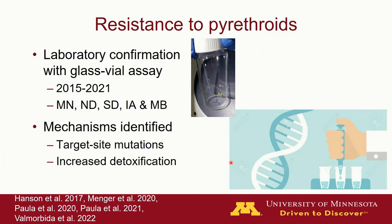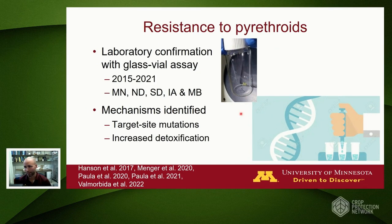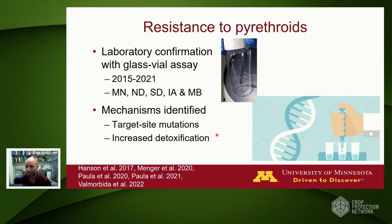We've also been doing work to look at the mechanisms of resistance, figuring out how soybean aphids are surviving exposure to the insecticides. We've got evidence of two different mechanisms: one is called target site mutations, where there are mutations at the binding site on the nerve cells so the insecticide molecules can't bind anymore. We also have evidence for increased detoxification, meaning resistant aphids may have more active enzymes that break down insecticide molecules after they get into the aphids.